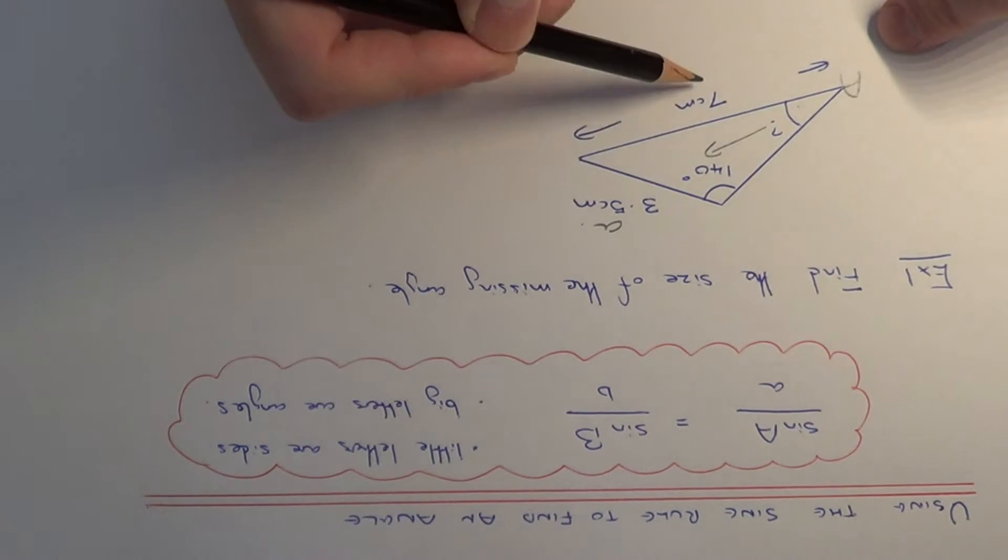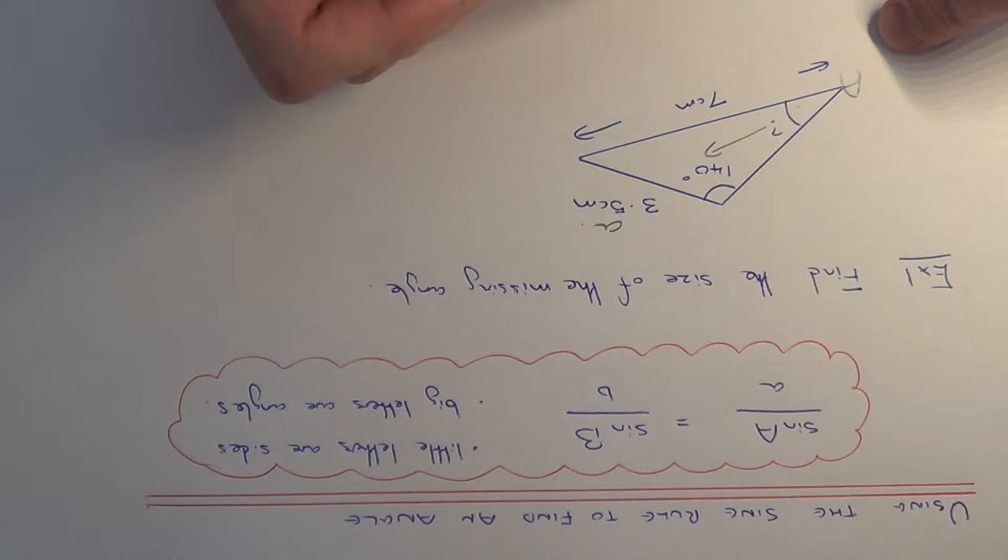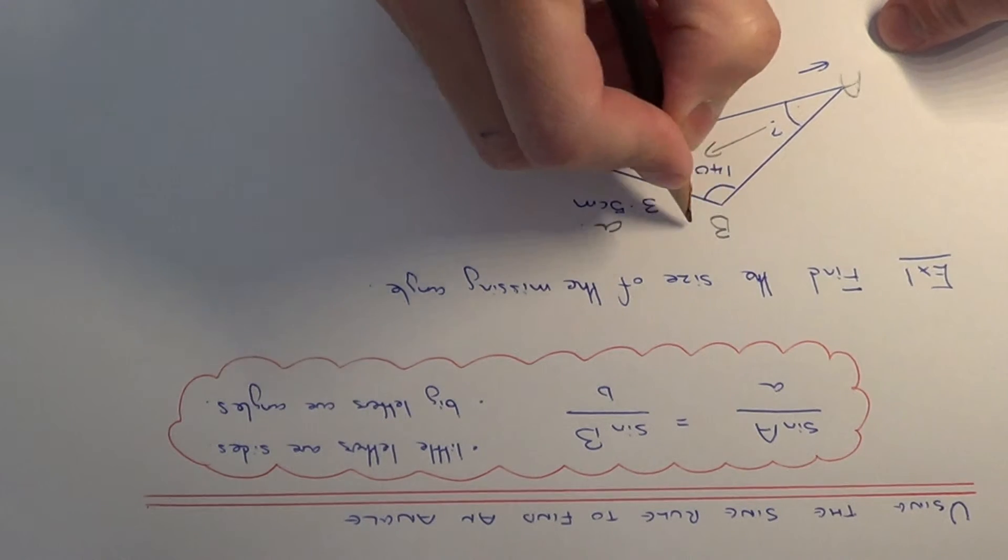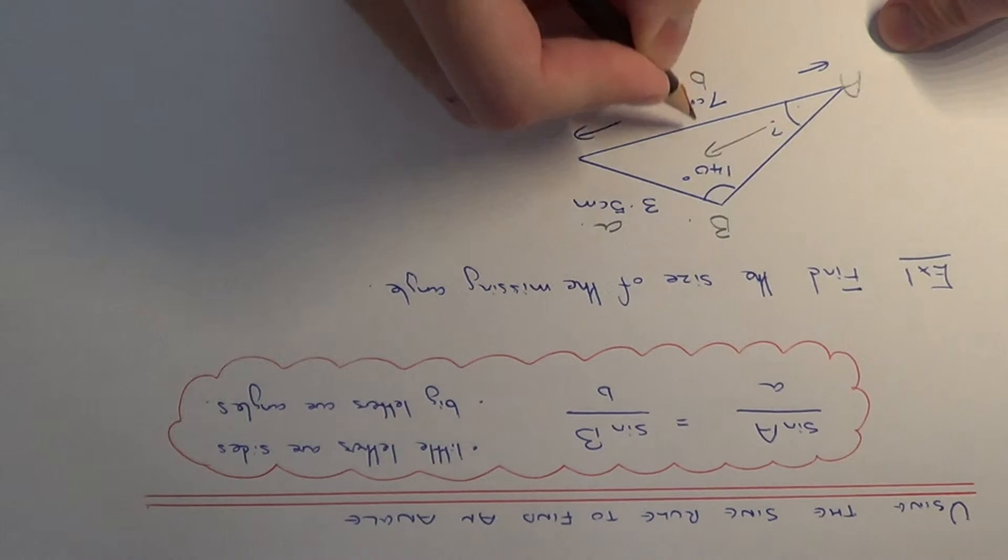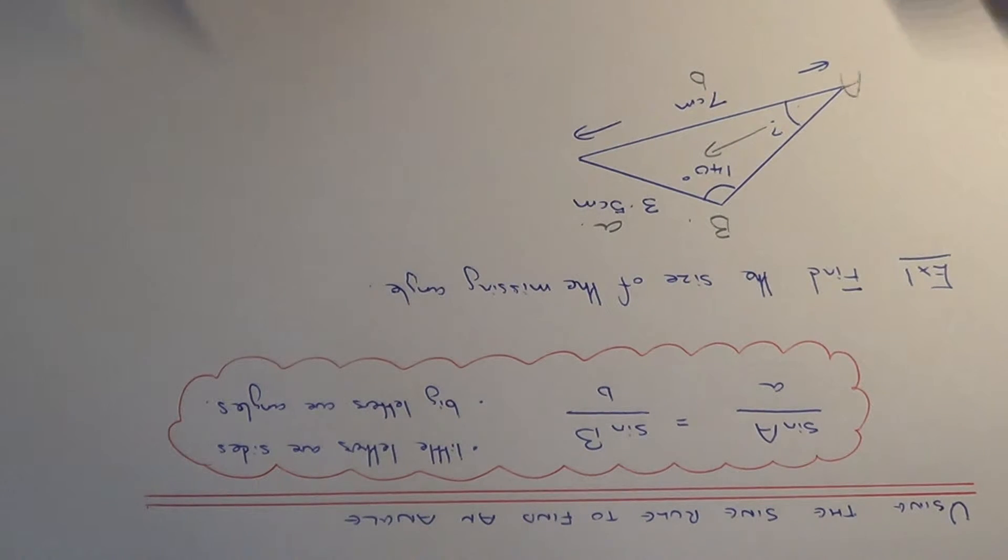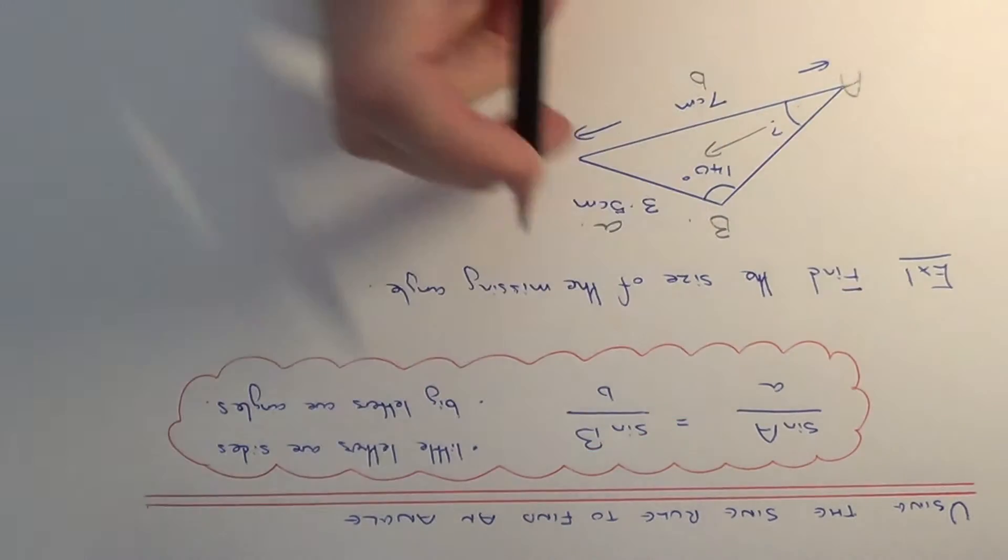Therefore the other pair that we have of side and angle, this would be little b and the angle here would be capital B because this side is opposite that angle. We just need to now substitute the numbers into the formula above.